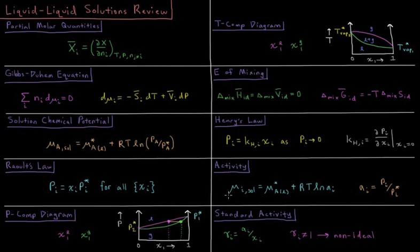We can define activity, which is an analog to the mole fraction for non-ideal solutions, so the chemical potential for a substance in solution is going to equal the chemical potential of the pure liquid plus RT times the natural log of the activity, which would have been the mole fraction if our solution was behaving ideally.